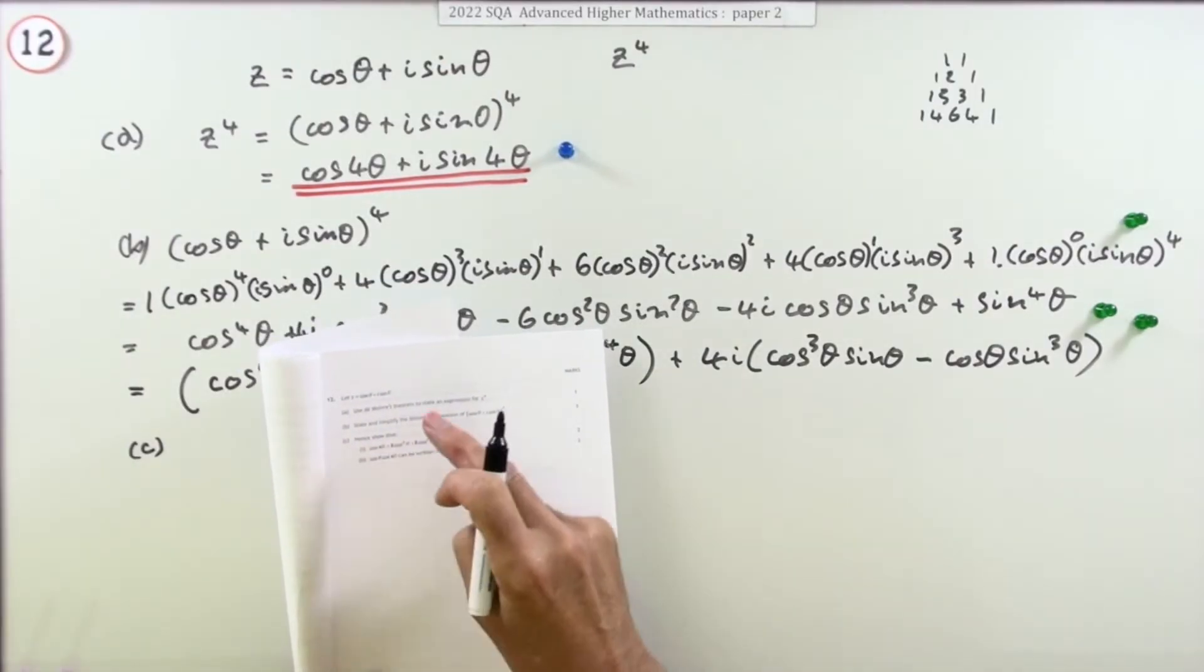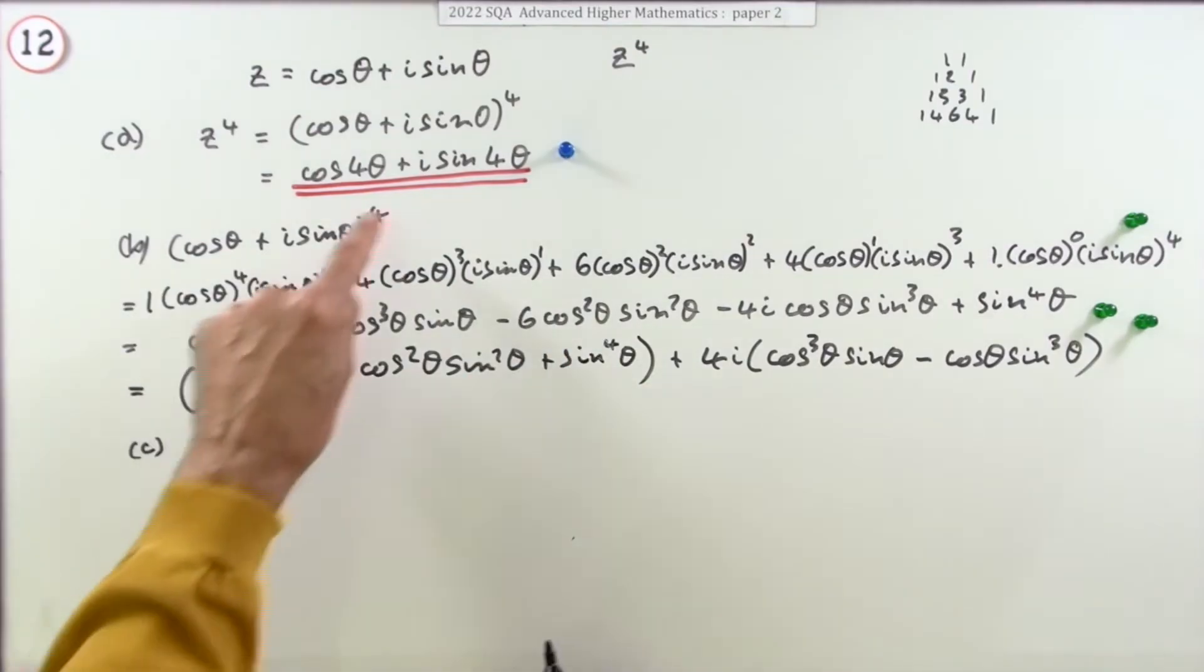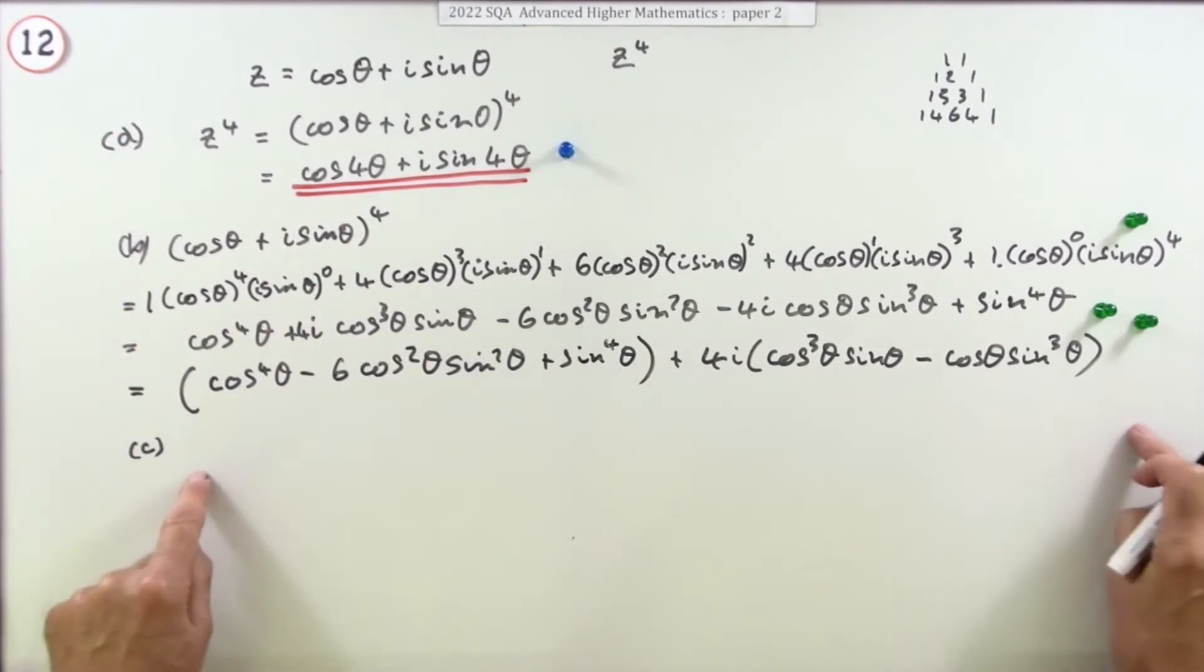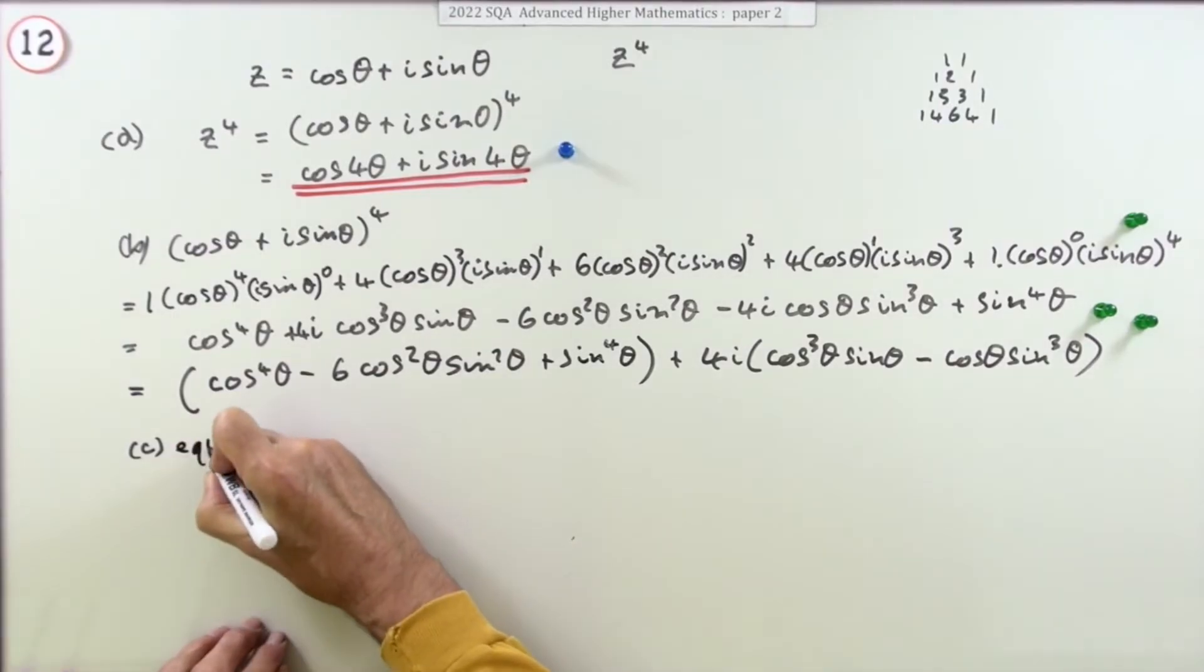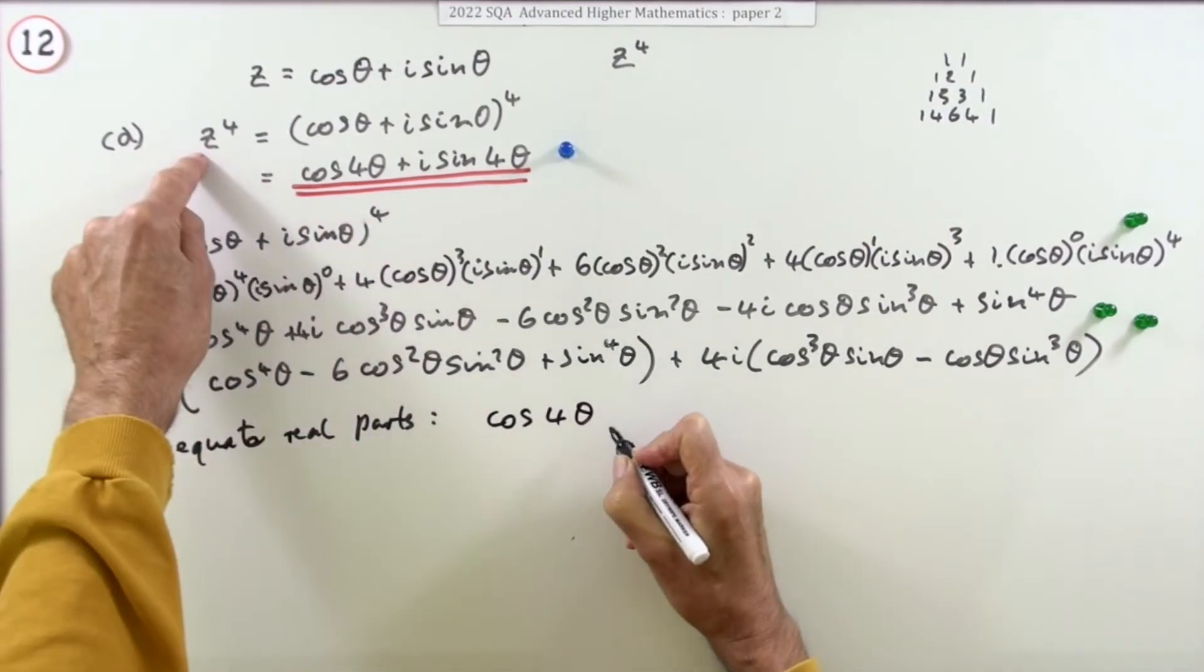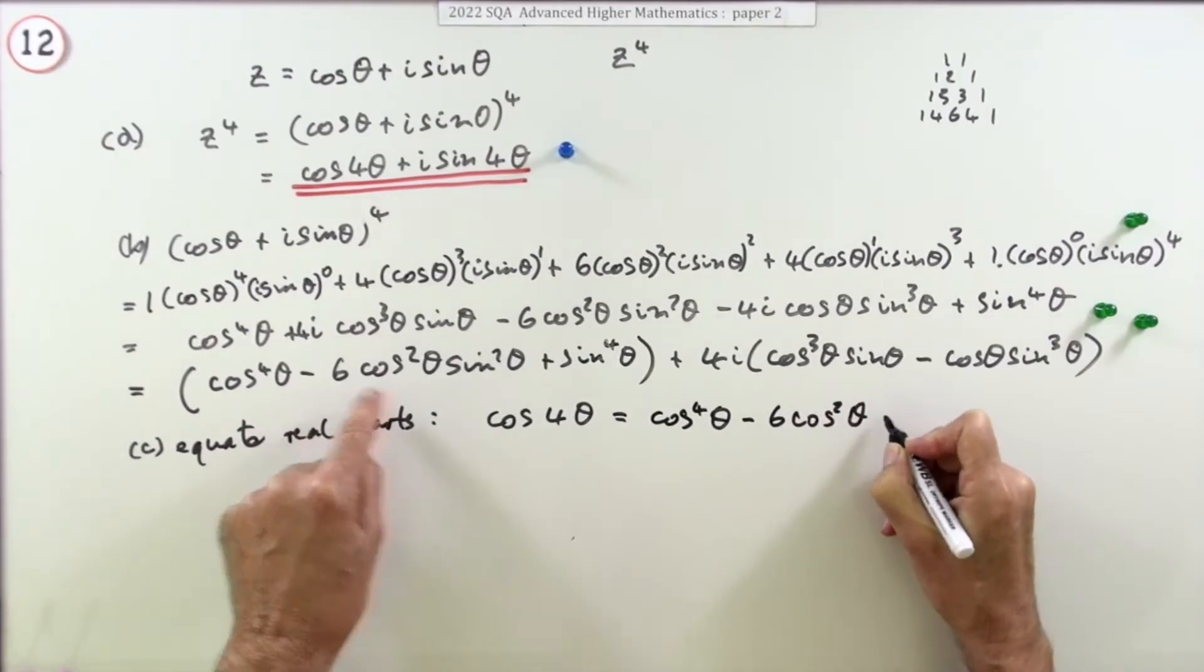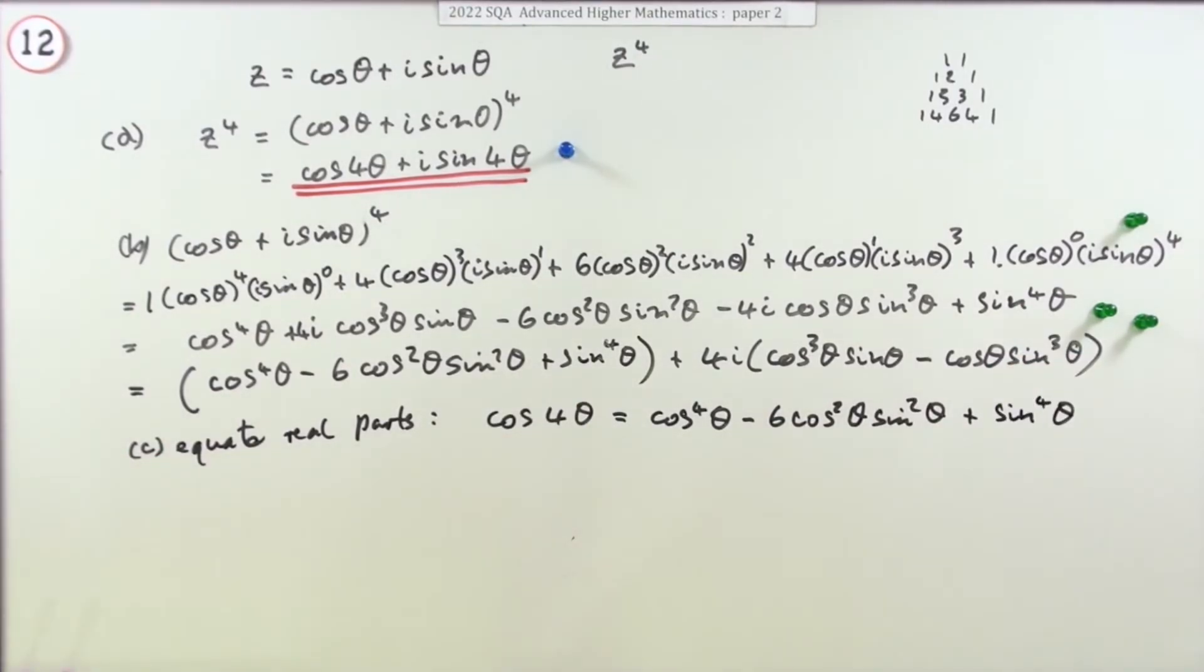Part c then for two marks, hence show that cos 4 theta is 8 cos to the power 4 theta minus 8 cos squared theta plus 1. Well cos 4 theta was the real part of z to the 4 which means it would correspond to the real part of the expansion which I've already separated out here. Because otherwise you'd just have to pick out the real parts. So maybe I'll give the reason for that, equate real parts. And if you equate the real parts you'll have this cos 4 theta from the original expression will be cos to the 4 theta minus 6 cos squared theta sine squared theta plus sine to the 4 theta from the expansion. So equating the real parts gets a mark.